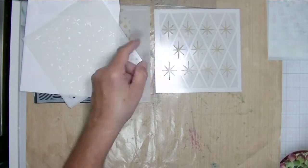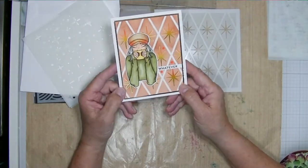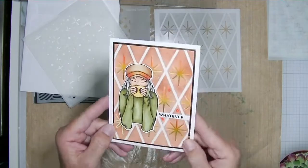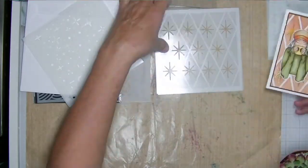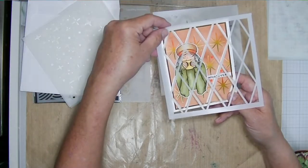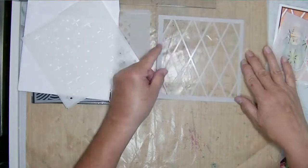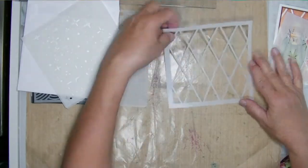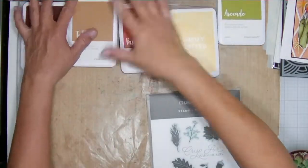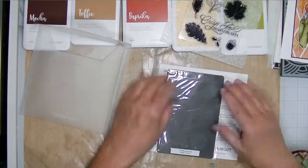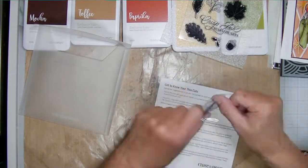This is a two-layer stencil set. You can see how it layers together on this card I made for a hop for Three Room Studio a couple weeks ago. I love this pattern and I really like this diamond lattice. So I want to use that diamond lattice today. I think it's just such a fun pattern.